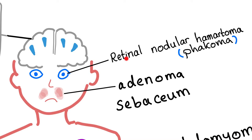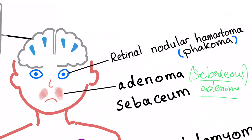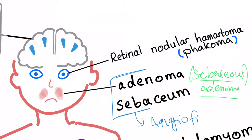There are also retinal hamartomas, which are nodular and known as phakomas. On the face, there is something called adenoma sebaceum — but beware, this is not the same as sebaceous adenoma. Sebaceous adenoma involves sebum and the sebaceous glands, while adenoma sebaceum is actually a misnomer for angiofibromas. Do not confuse these two terms.